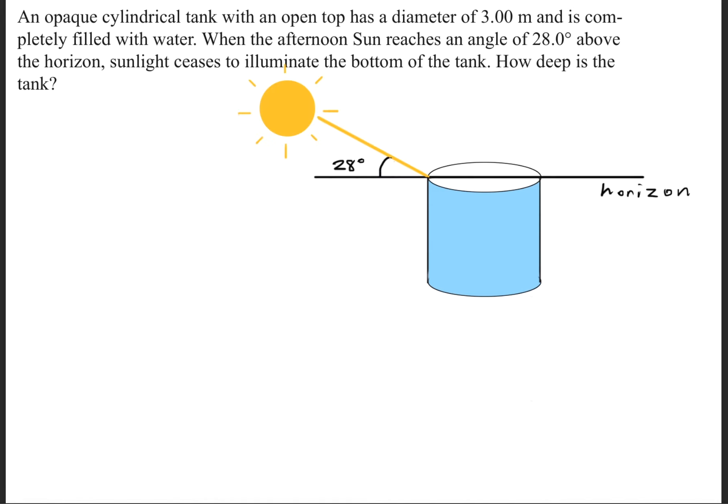and right here I have drawn this imaginary horizon because the question stated that when the afternoon sun reaches an angle of 28 degrees above the horizon, sunlight ceases to illuminate the bottom of the tank.